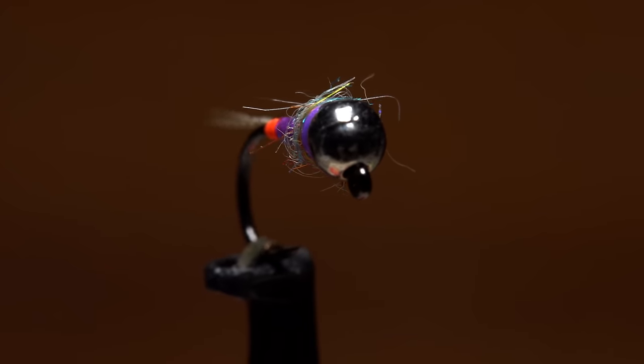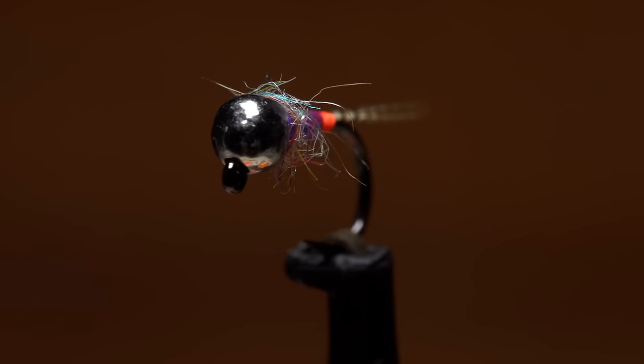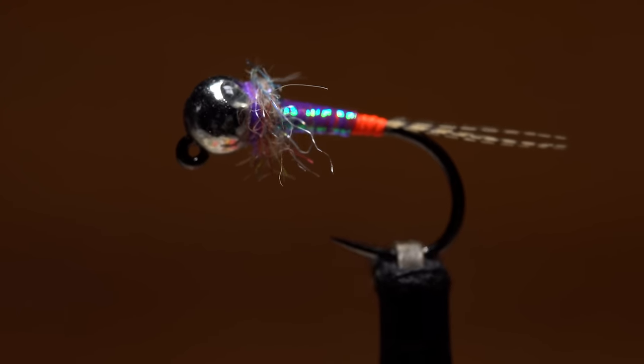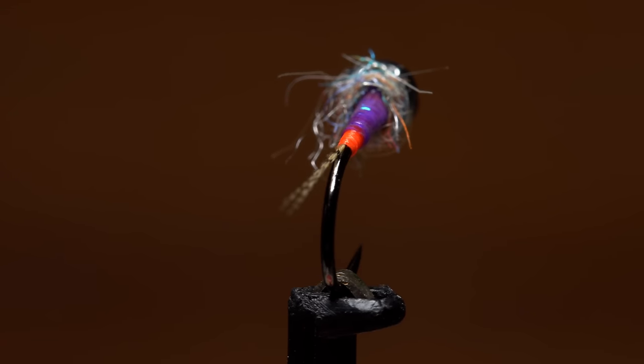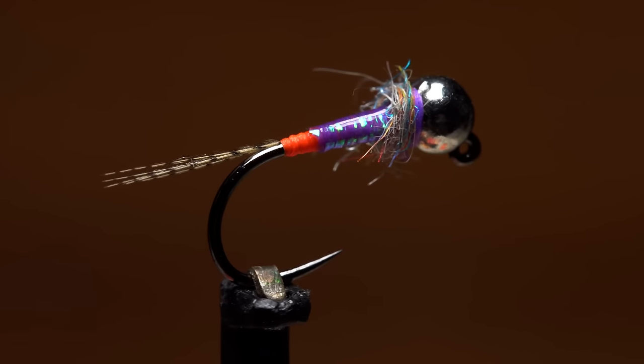This is Dave McKenna's Rumble Bug. He designed it to help out a buddy after a tough day of competition, and it worked on the Raven's Fork in Cherokee, North Carolina. Since then, it's worked just about everywhere else.